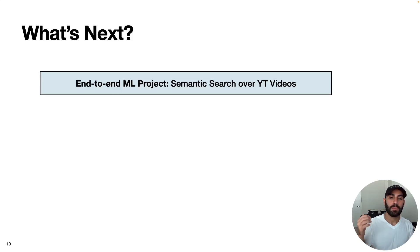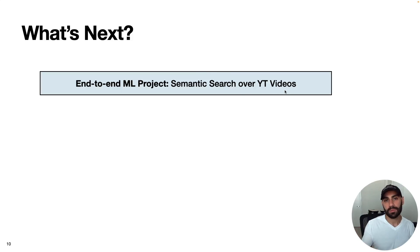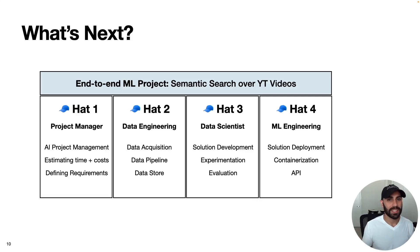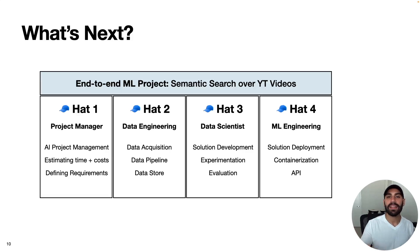This video is part of a larger series. In upcoming videos, I'll implement a machine learning project end-to-end, walking through each of the four hats — specifically building a semantic search system that allows people to search across all of my YouTube videos. I'll cover the project manager hat with AI project management and estimating costs, the data engineering hat with data acquisition and pipeline building, hat three with solution development and evaluation, and finally the ML engineering hat with deployment, containerization, and building an API. I hope you got some value from this video — drop suggestions in the comments, and thanks for watching.